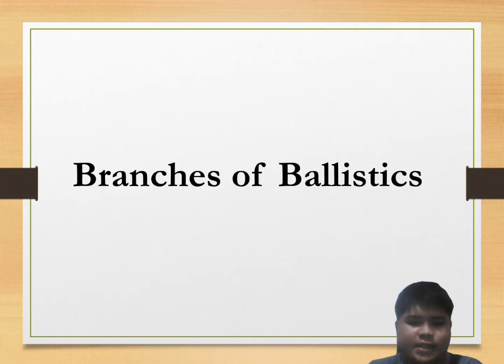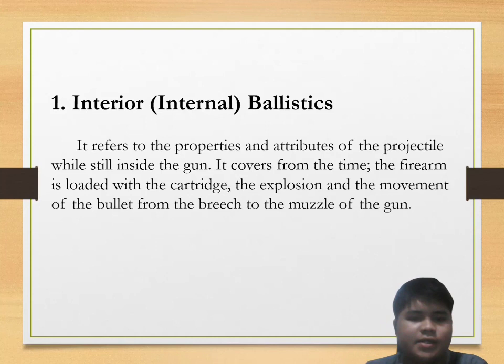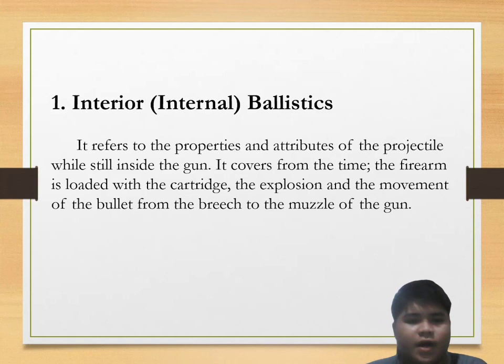The branches of ballistics: First is interior or internal ballistics. It refers to the properties and attributes of the projectile while still inside the gun. It covers from the time the firearm is loaded with the cartridge, the explosion, and the movement of the bullet from the breech to the muzzle of the gun.